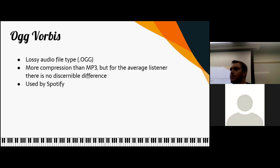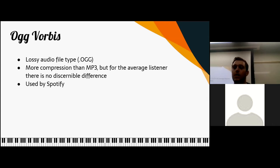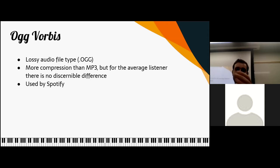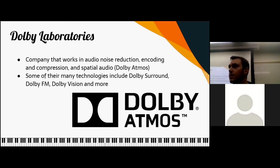So OggVorbis — remember when we talked about MP3 and WAV and I mentioned OggVorbis? You've probably never run into it before. Similar to MP3, it's a lossy audio file type — when compressed, we lose information about the sound, but that loss is not discernible for the average listener. It's an algorithm that has improved on the MP3 compression algorithm, and Spotify uses this. When you're playing a song on Spotify, you're listening to an OggVorbis file, not an MP3. OggVorbis files are very small but contain almost all the necessary information to produce the optimal listening experience.